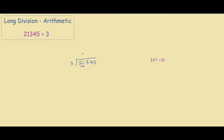So we put a 7 up here above the 1. And what we do with the 7, we do 7 times 3, which is 21. And we subtract that from our 21. This will give us 2 minus 2 is 0, 1 minus 1 is 0, and we're left with 3, 4, 5. We bring these down.